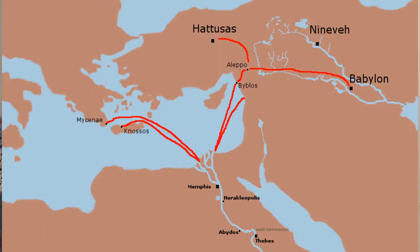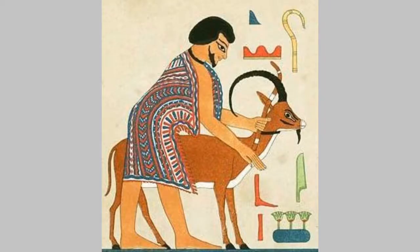Amenemhat the Fourth did expeditions into the Sinai and into Punt, another name for Libya. The reign of Amenemhat the Fourth coincides with the beginning of the reign of Hammurabi in Old Babylon — this is the very end of the 12th dynasty just as Old Babylon is taking off in Mesopotamia, which was going to open trade wide open along all trade routes. As this was happening, the people known as the Hyksos were already migrating into northern Egypt from the land of Canaan and from the Sinai Peninsula. First let's talk about how the 12th dynasty actually ended.